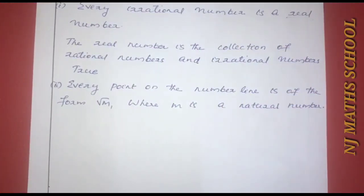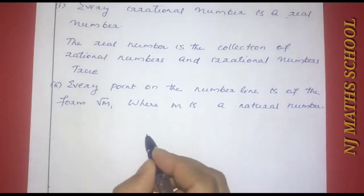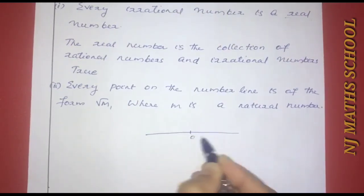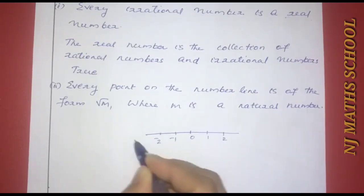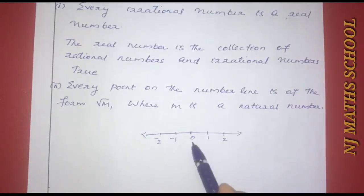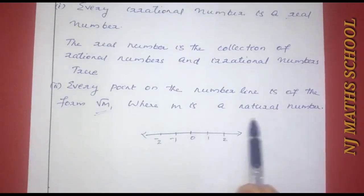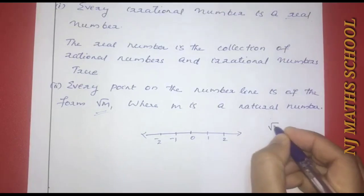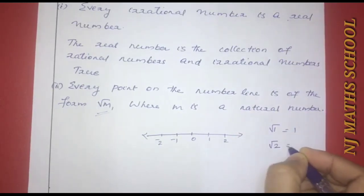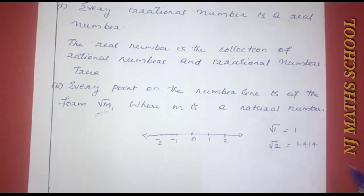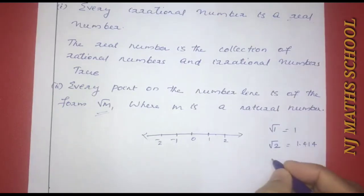Second statement: every point on the number line is of the form √m where m is a natural number. Consider a number line with points 0, 1, 2, etc. and -1, -2, etc. The formula given is √m where m is a natural number. √1 = 1, and √2 = 1.414.